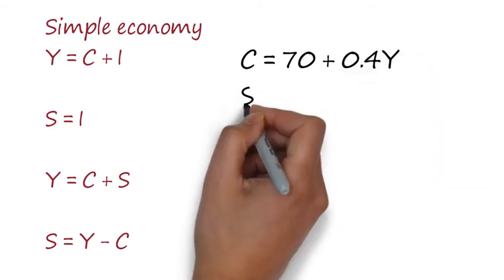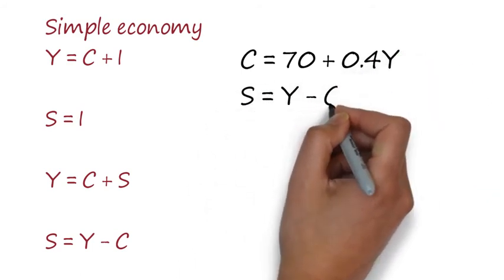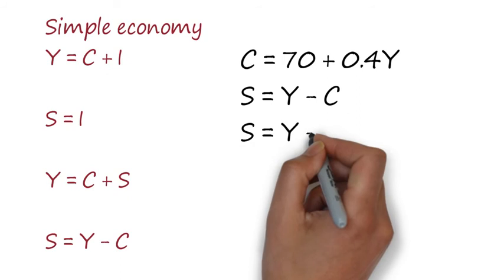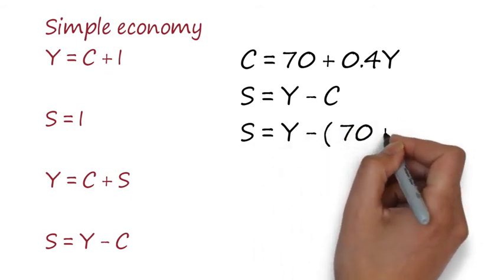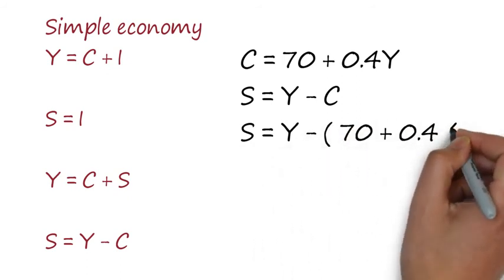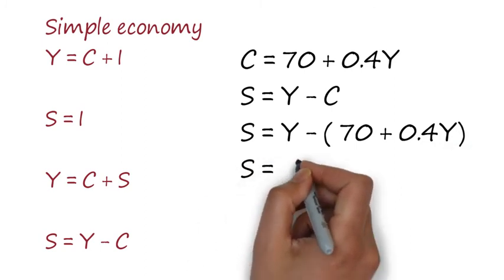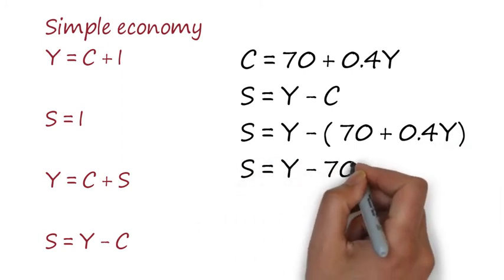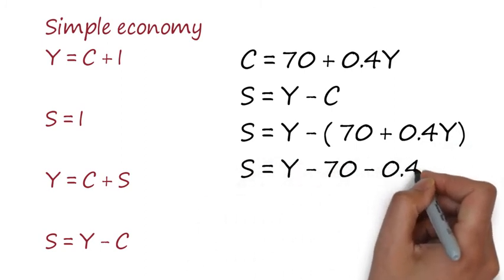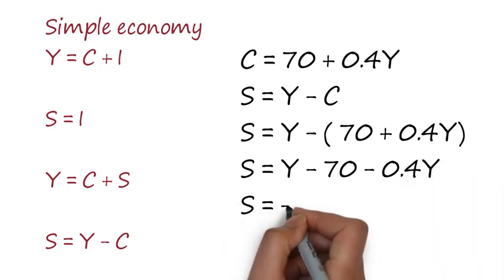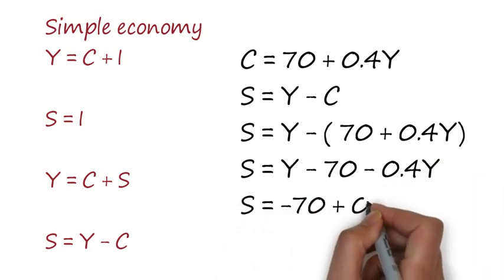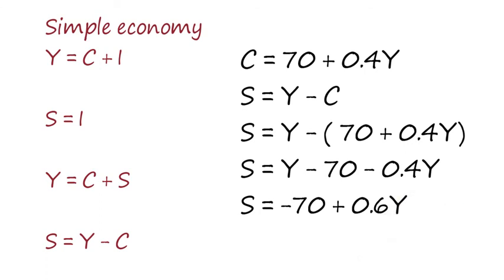S = Y - C. S = Y - (70 + 0.4Y). S = Y - 70 - 0.4Y. S = -70 + 0.6Y.